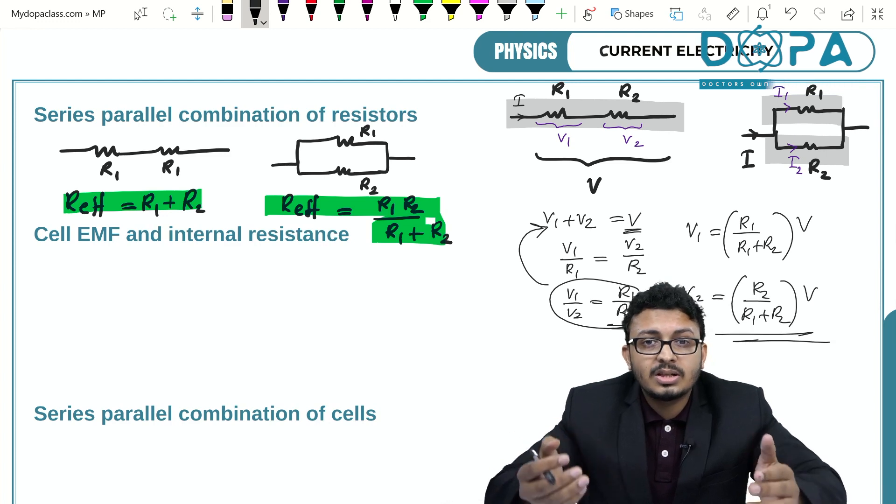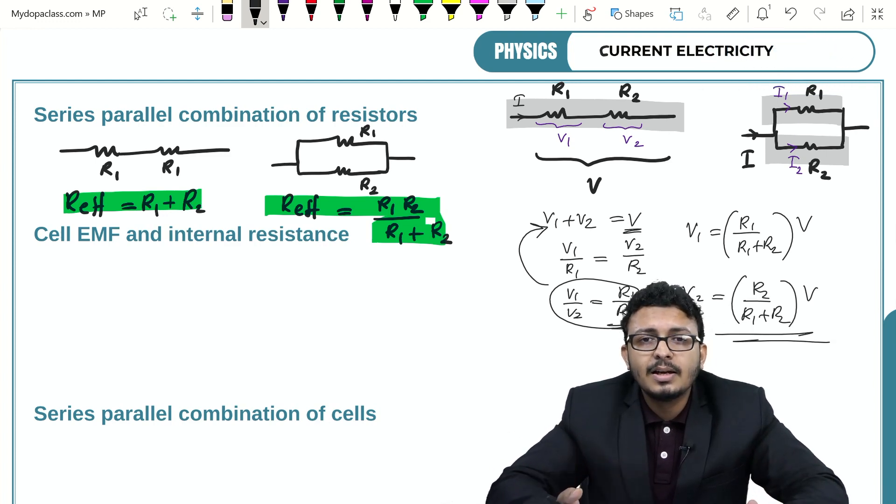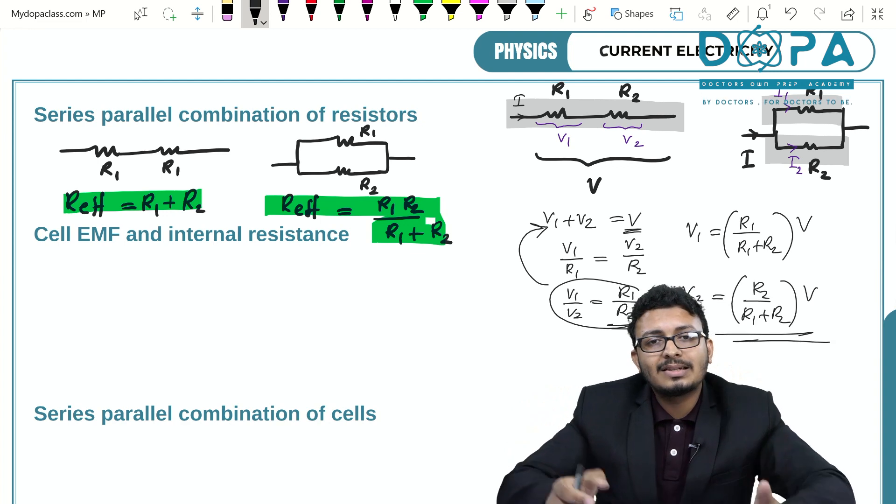Now to answer the question that I asked before, what is the current across these two resistors when they are connected in parallel.